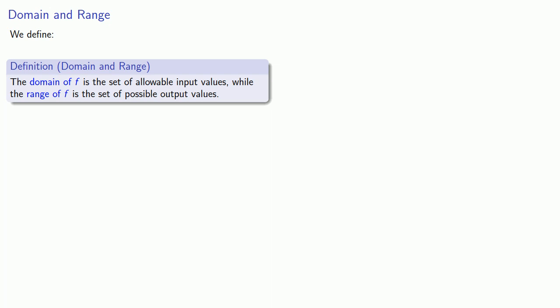One important thing to notice here is the domain is what you're allowed to do, while the range corresponds to what you could do.